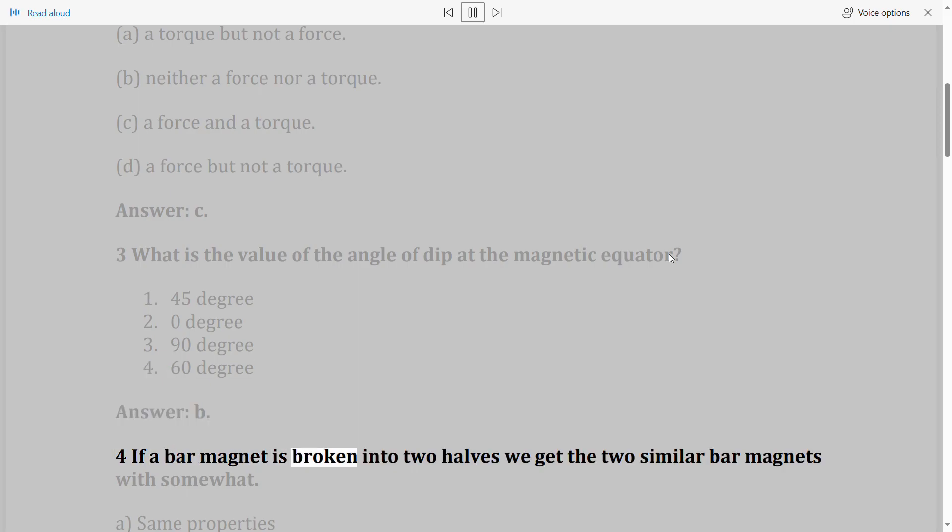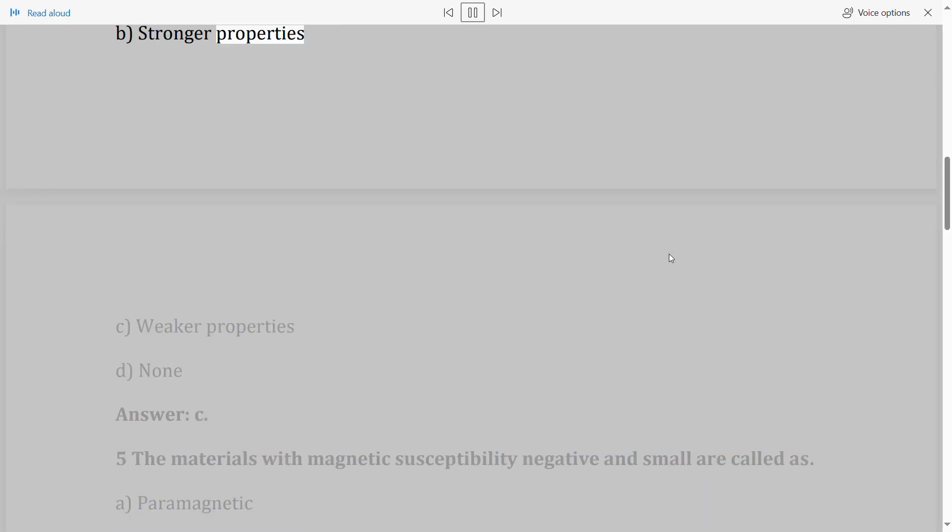Question 4: If a bar magnet is broken into two halves we get the two similar bar magnets with somewhat A. Same properties, B. Stronger properties, C. Weaker properties, D. None.